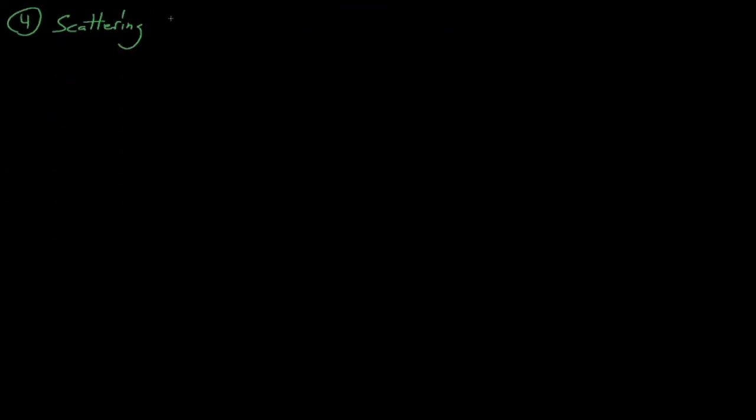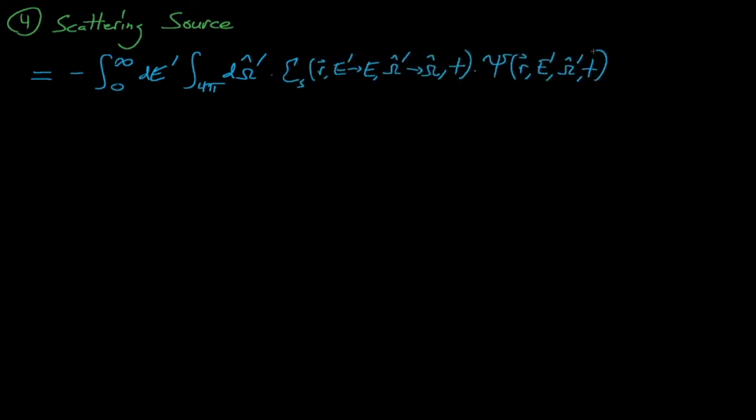The scattering source tallies the rate at which neutrons from all other energies, E', and all other directions, Ω', scatter into this phase space, which again has energy E and direction Ω.